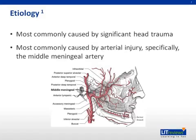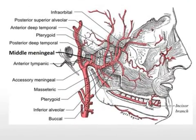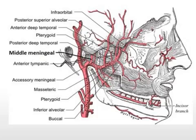The most common cause of an epidural hematoma is significant head injury — traumatic brain injury. The mechanism is often a focal blow to the skull, and the most common source of blood is injury to the middle meningeal artery. This artery is a terminal branch off the extracranial artery. The anterior branch of the middle meningeal artery runs beneath the pterion, where it is vulnerable to injury because the skull is thin at that point.